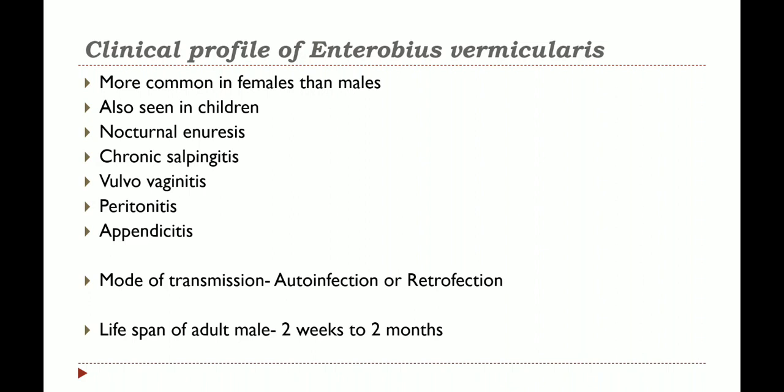For treatment, mebendazole, albendazole, and pyrantel pamoate can be administered. Mebendazole is given 100mg once daily, albendazole 400mg once daily, and pyrantel pamoate 11mg per kilogram. It is very essential to also treat household members to eliminate asymptomatic reservoirs of potential reinfection. Total prevention is not realistic as transmission is so common due to auto-infection. Therefore, personal hygiene must be strictly advised, including proper washing of bed clothes, keeping nails short and clean, and frequent hand washing.